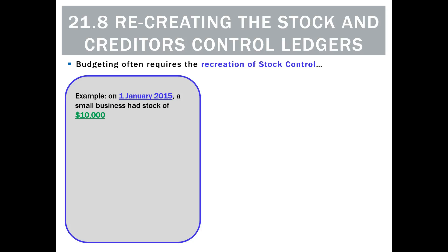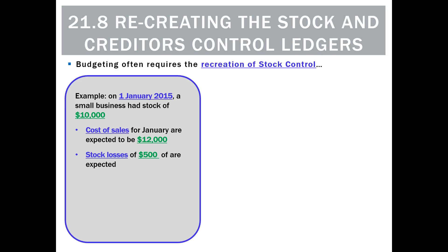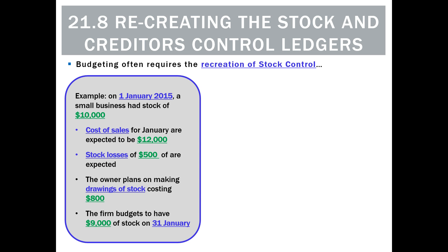For example, we're budgeting for January and we know that at the start of the month we've got stock of $10,000. Cost of sales during January are expected to be $12,000. We think there'll be stock losses of $500. The owner will take out some drawings of stock for $800, and the firm thinks that at the end of the month there will be stock of $9,000.